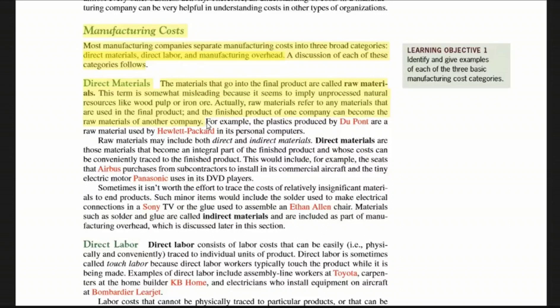For example, a company makes plywood boards. The board can be used to make a table. So the board is the final product of one company. If another company makes furniture, their direct materials are those raw material boards. The company's direct materials are the raw materials they purchase.